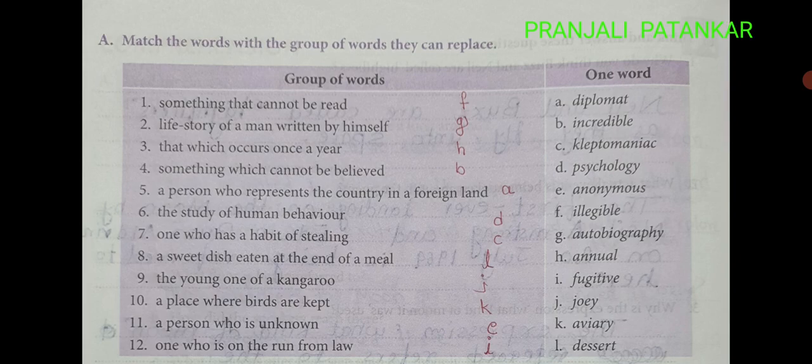Match the words with the group of words they can replace. 1. Something that cannot be read — F. Illegible. 2. A life story of a man written by himself — G. Autobiography. 3. That which occurs once a year — H. Annual. 4. Something which cannot be believed — B. Incredible. 5. A person who represents the country in a foreign land — A. Diplomat. 6. The study of human behavior — D. Psychology. 7. One who has a habit of stealing — C. Kleptomaniac.